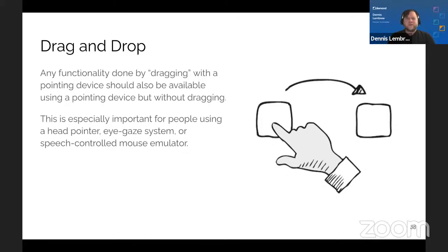The WCAG criterion is WCAG 2.2 (still a draft) SC 2.5.7 Dragging Movements, Double-A: all functionality using a dragging movement can be achieved by a single pointer without dragging, unless dragging is essential. See sufficient techniques at bit.ly/techG219.